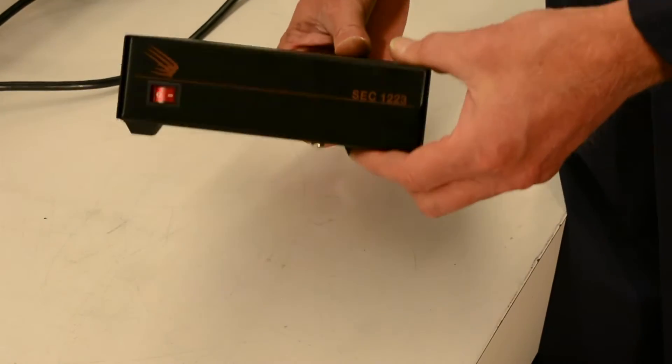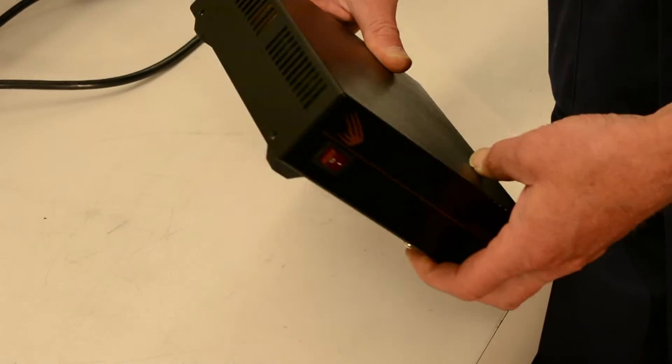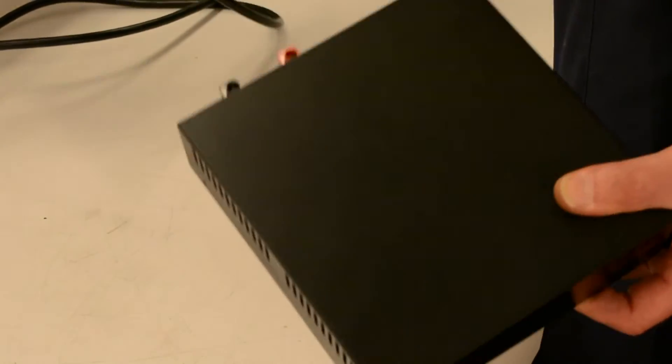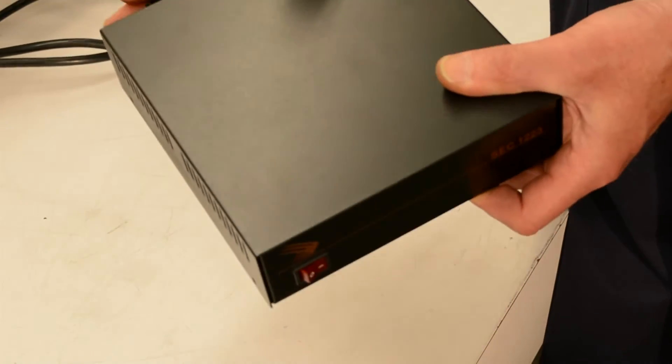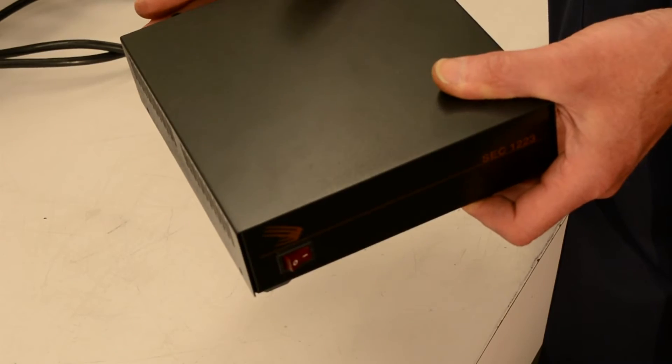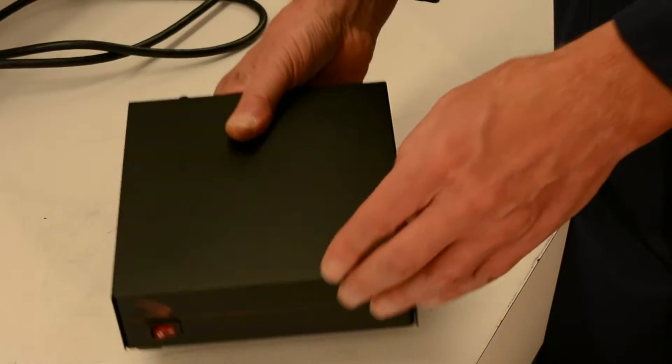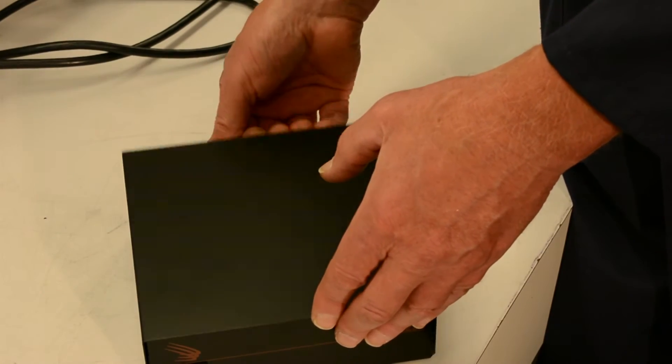So here's our 1223 power supply. First thing of course is to remove all power from the input and it's best to take the output connections off as well. Remove the four screws, two on each side, which will permit you to remove the cover.